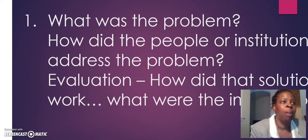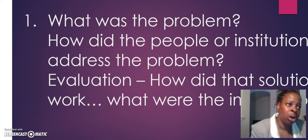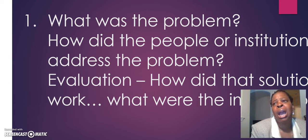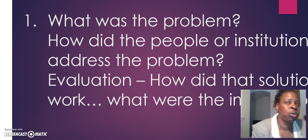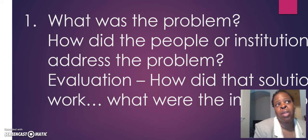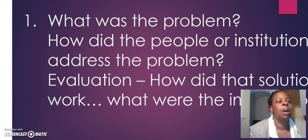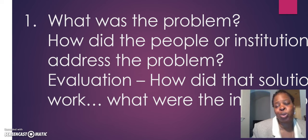For example: there were problems with the Articles of Confederation, and they addressed the problem by meeting for a convention where they talked about revising or throwing out the Articles of Confederation. Then, third, you would give me an evaluation of how that solution worked — what were the implications? If we're talking about the Three-Fifths Compromise at the Constitutional Convention, that would mean Southern states would have more representatives, Southern politicians would be more likely to be presidents — in fact, we had several presidents who were slave owners because of the implications of the Three-Fifths Compromise.